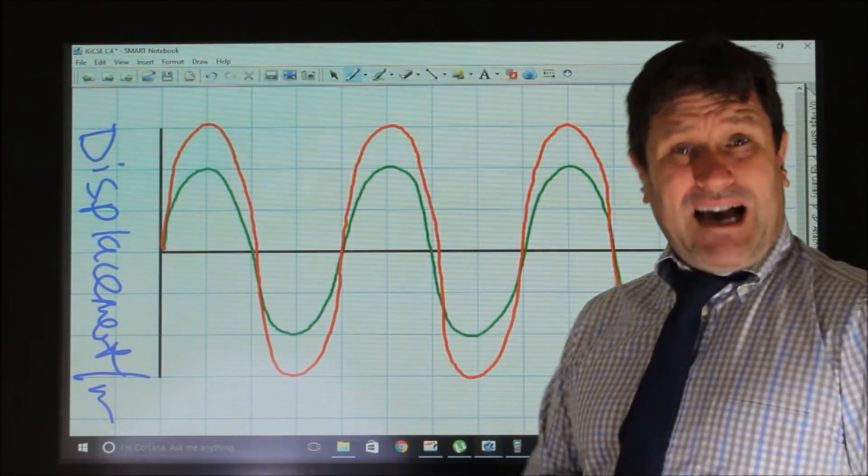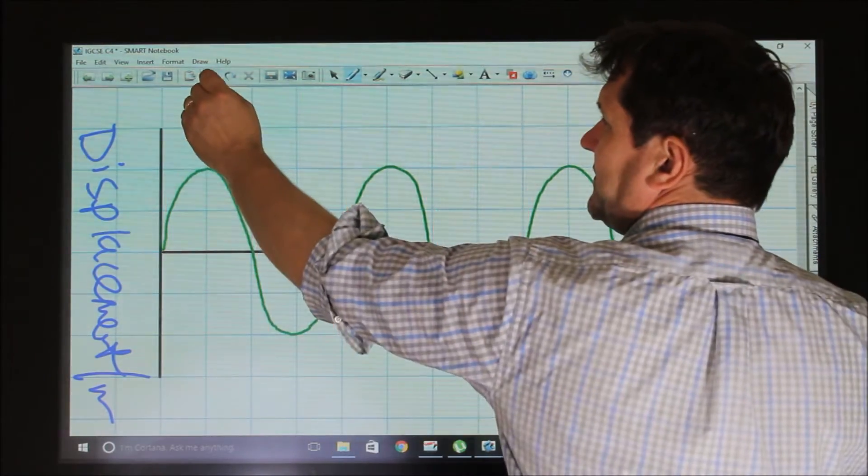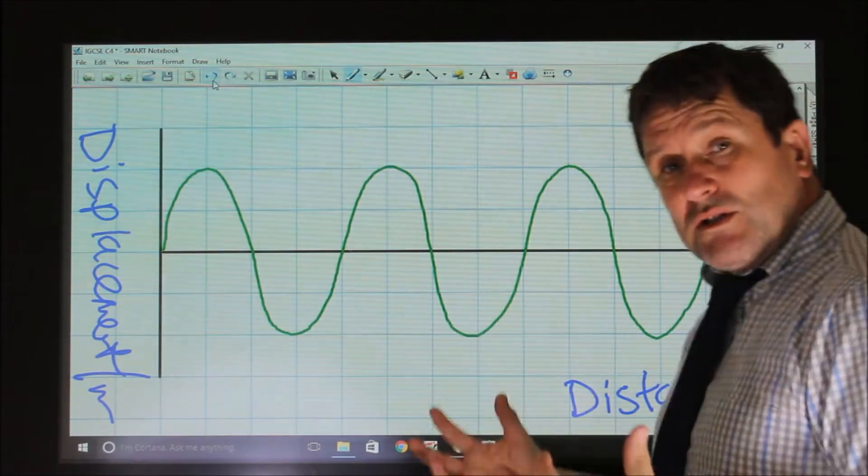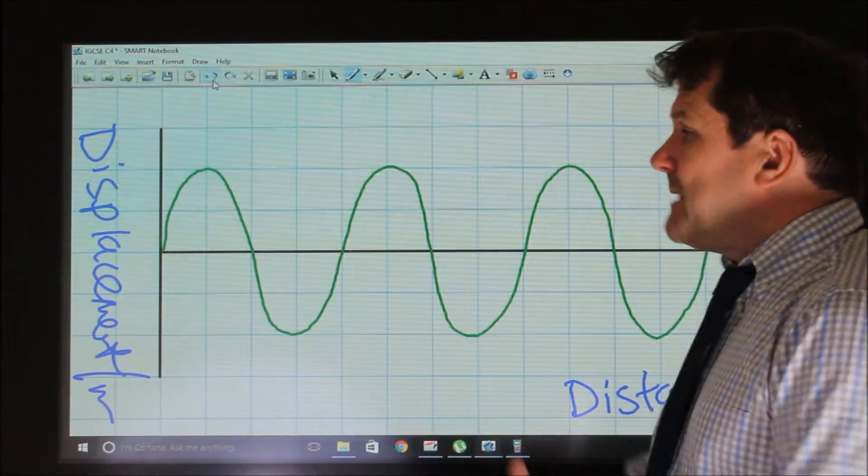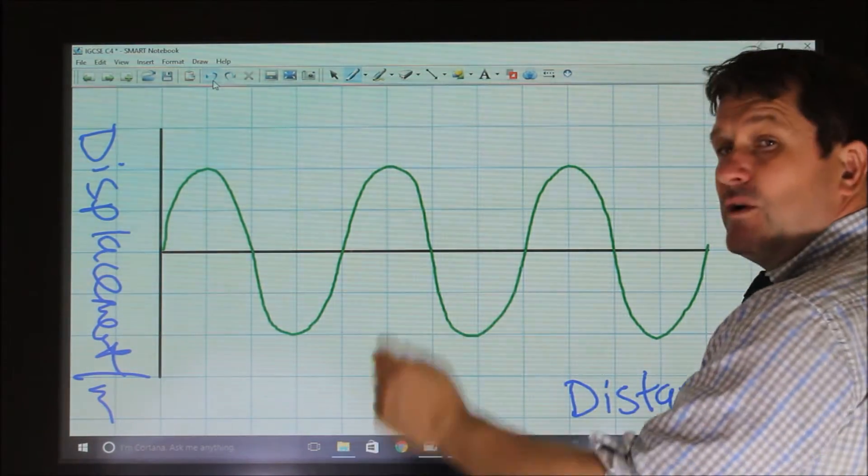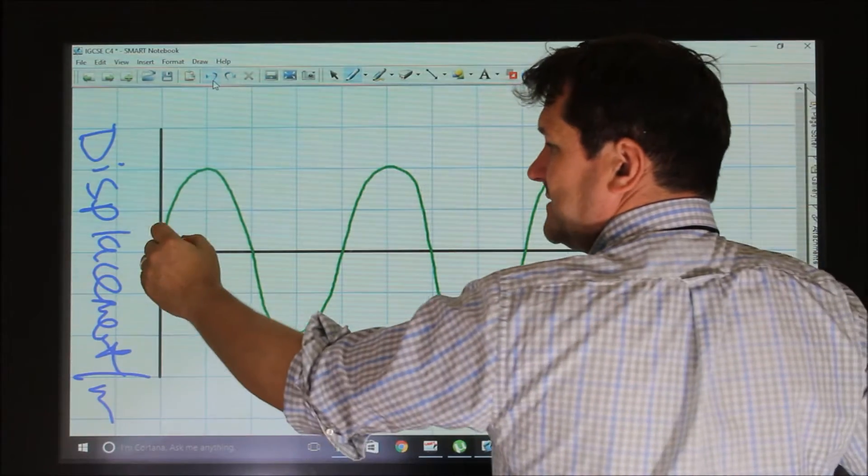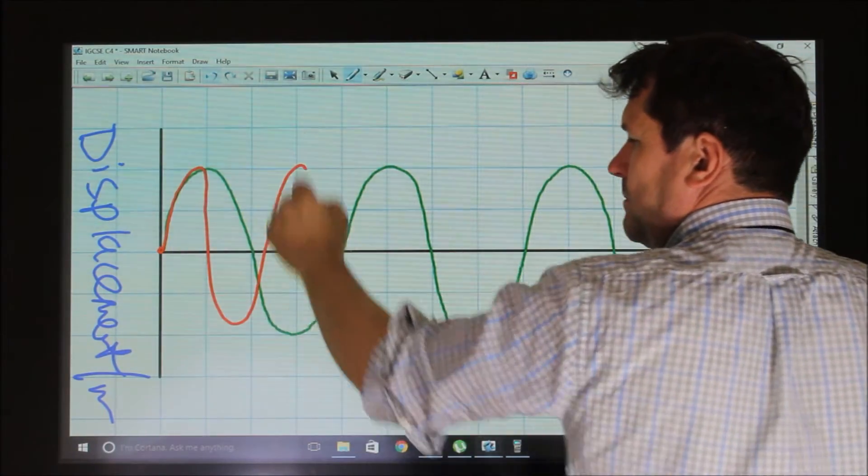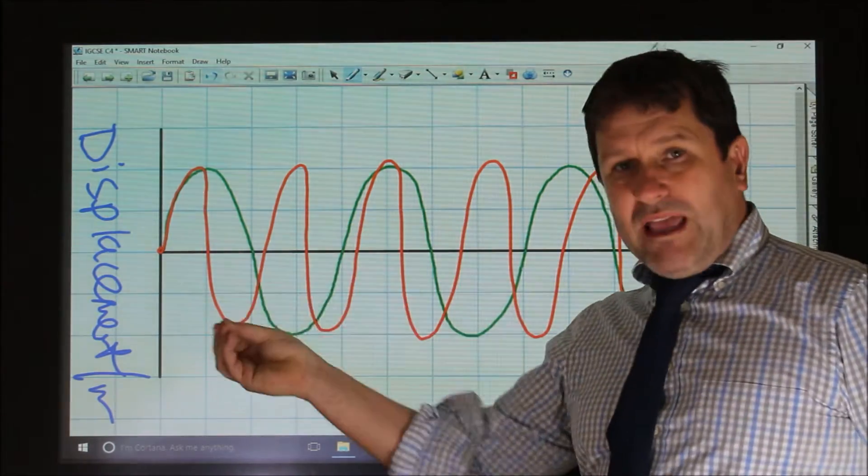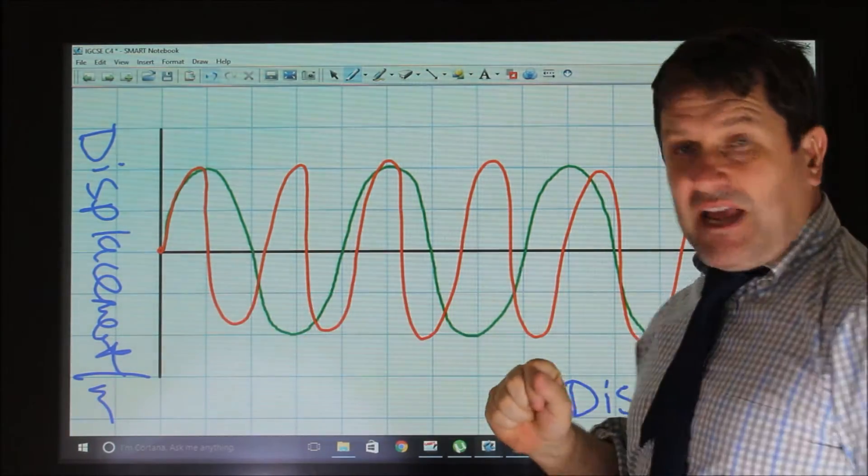Now if we were going to go to a higher pitch, then a higher pitch would give us more cycles per second. The frequency would be higher. There'd be more waves in a second. So a higher pitch would give us a wave that's like this, where we've got far more waves per second.